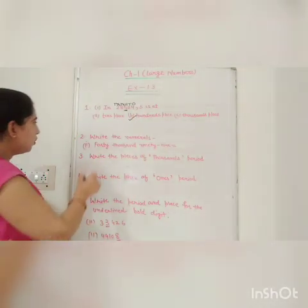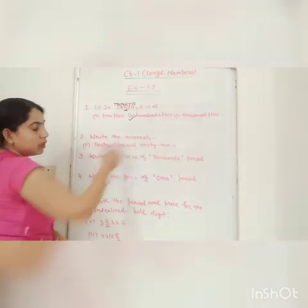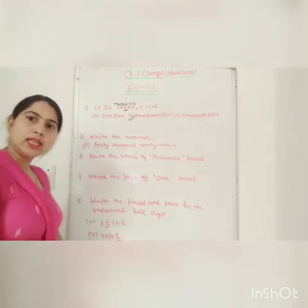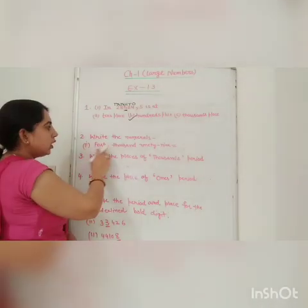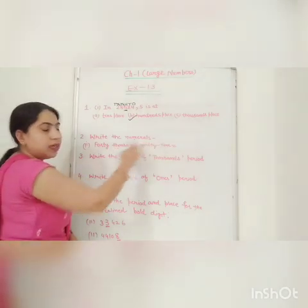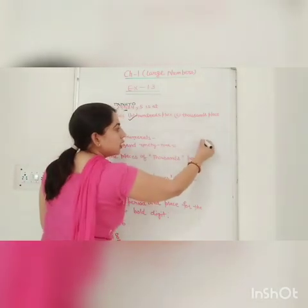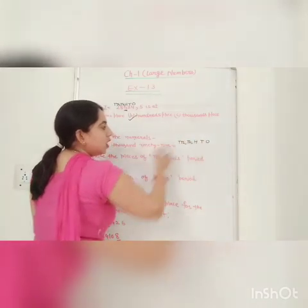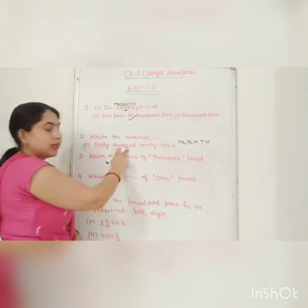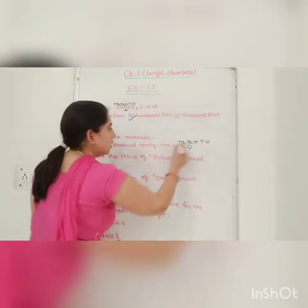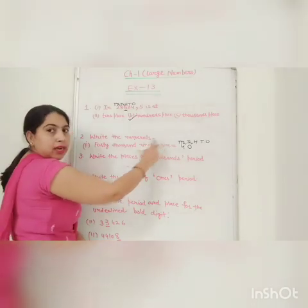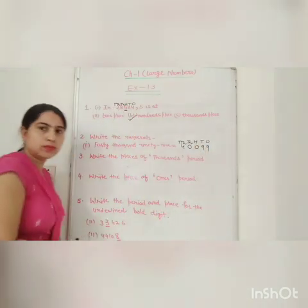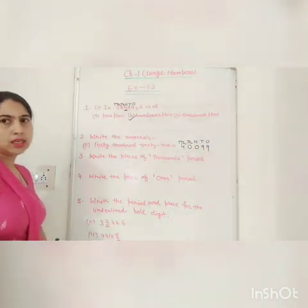Second question: write the numerals. This is written in words and you have to write in numerals. So 40,000's — here written 99. First of all write: 1's, 10's, 100's, 1000's, and 10,000's. So 40,000's. 99 will come in two places — 99. So put here 0. These are written in numerals.